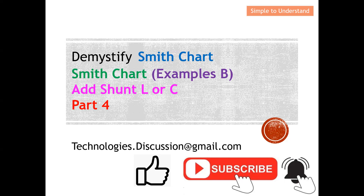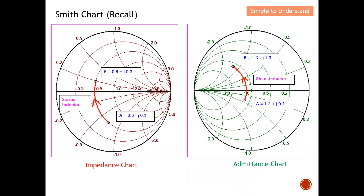Before I touch on the examples, let's do a quick recap on the Smith Chart. I hope you still remember how to differentiate impedance chart and admittance chart. For the impedance chart, the circles concentrate more on the right-hand side — the values start off bigger and slowly decrease in resistivity. For the admittance chart, the circles start off at a bigger number on the left-hand side and also reduce. So the key distinction is: impedance circles start from the right, admittance circles start from the left.